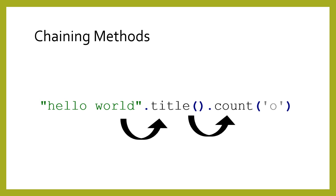When you need to call methods on the same string, variable, or value, it's a little different. As shown below, you will repeat the period, name, and parentheses each time. By placing them side by side, you will keep using the same variable, modifying it in turn from left to right.